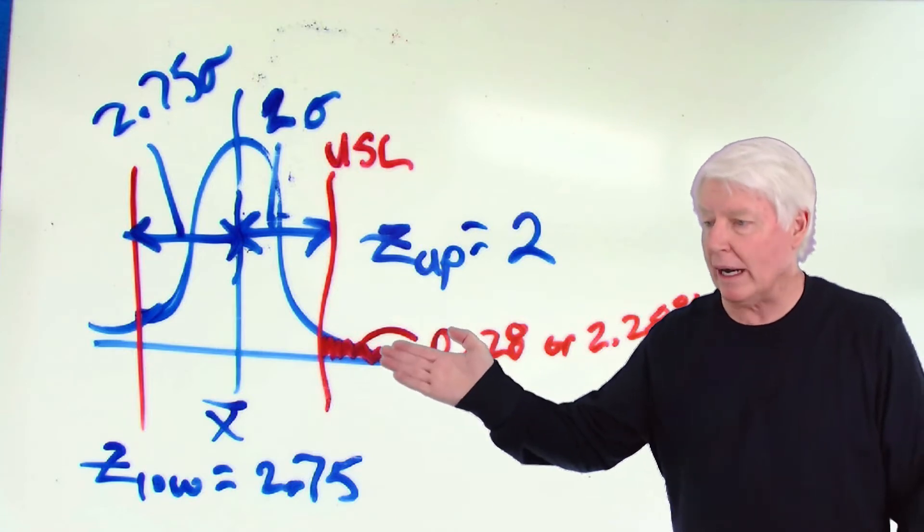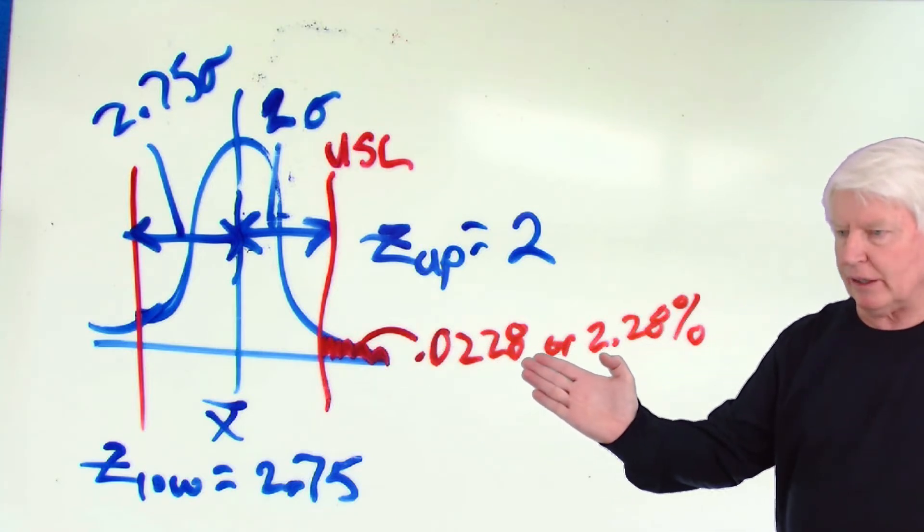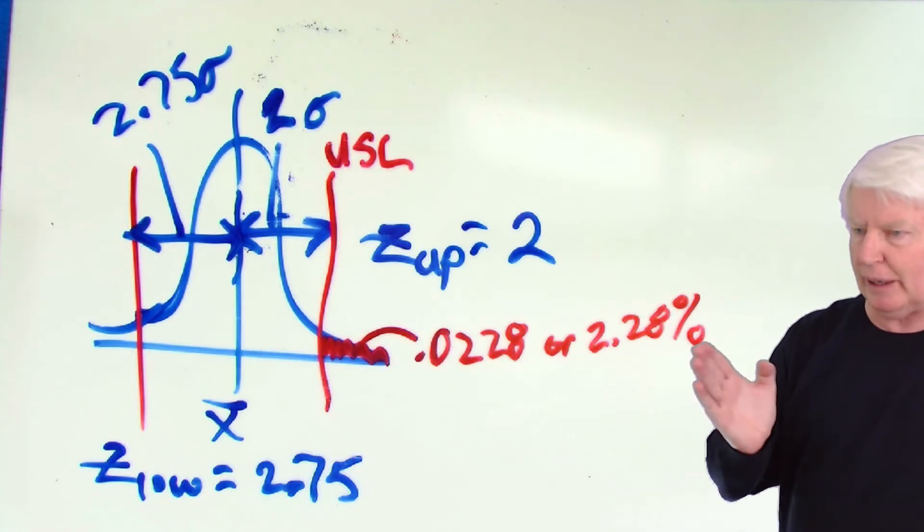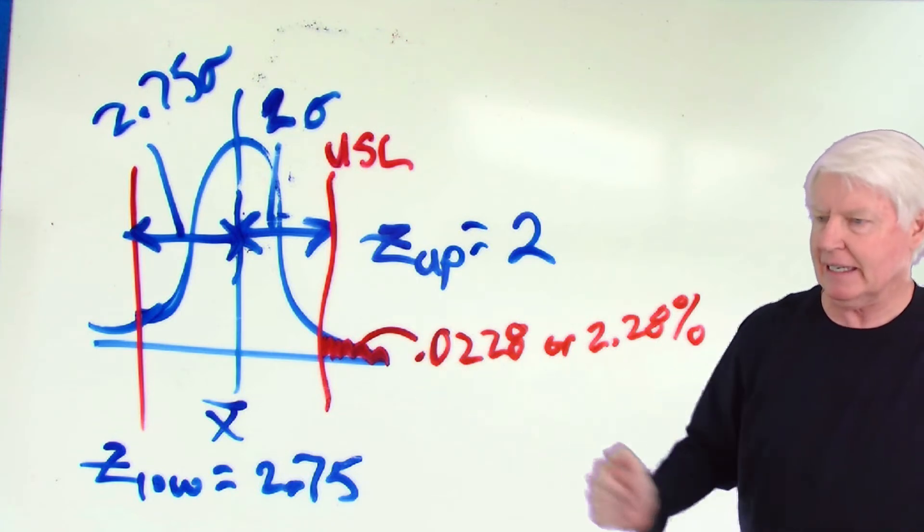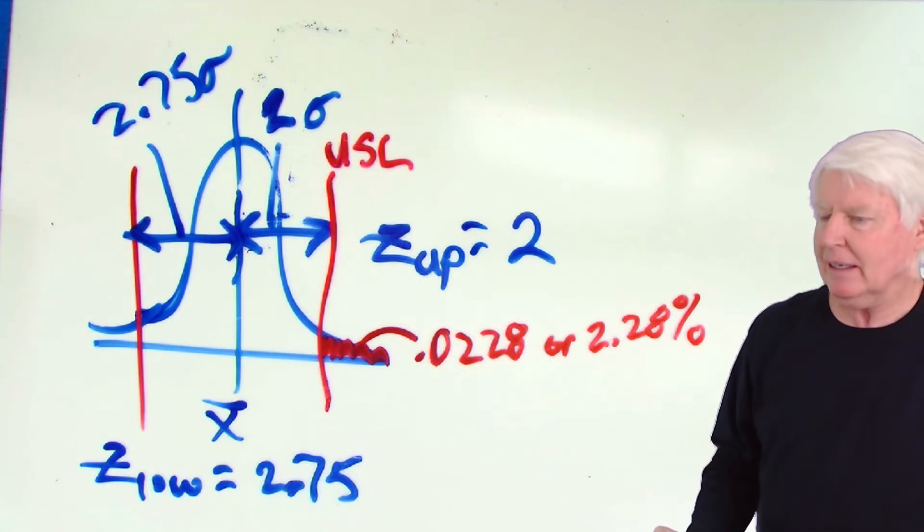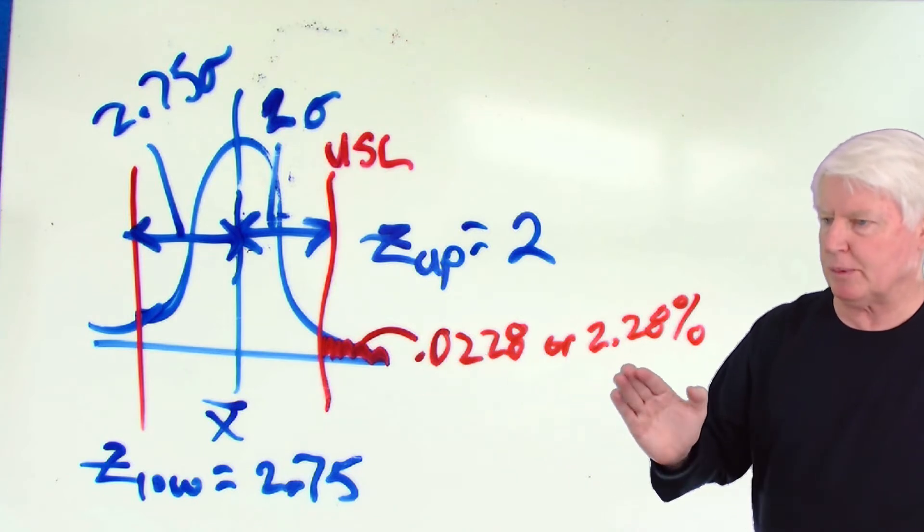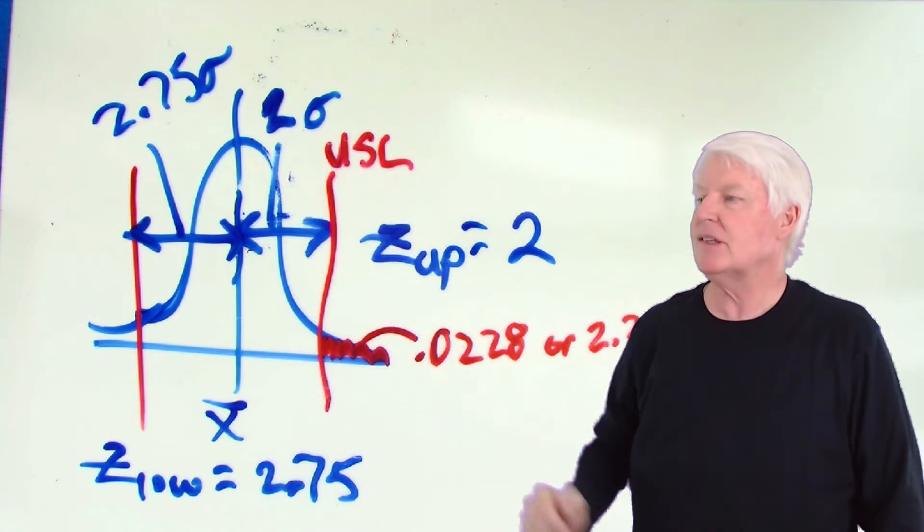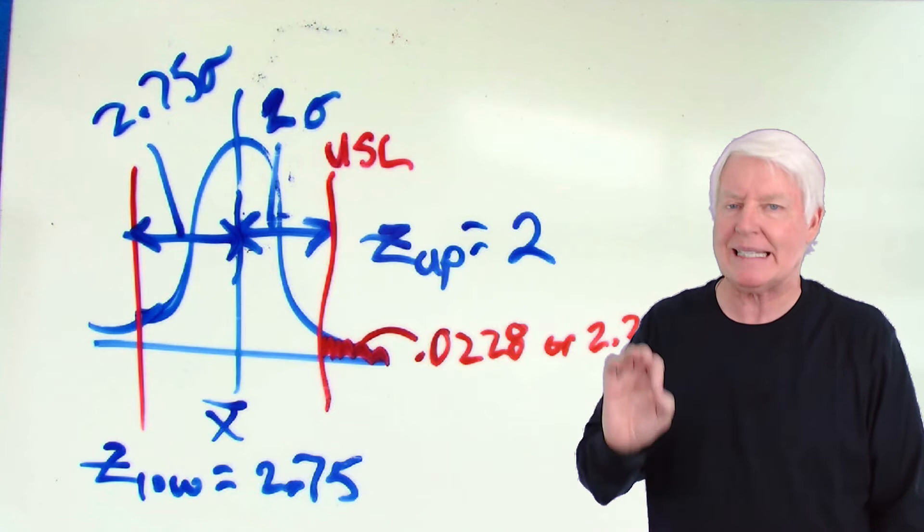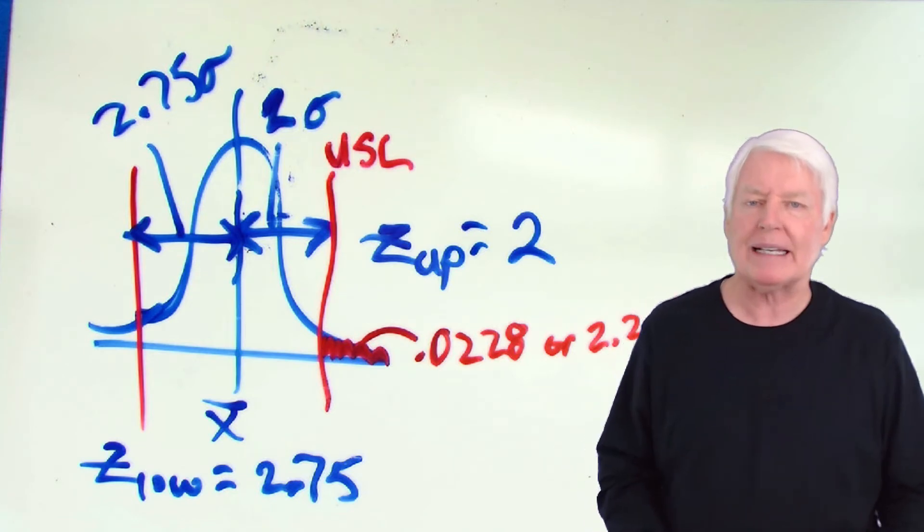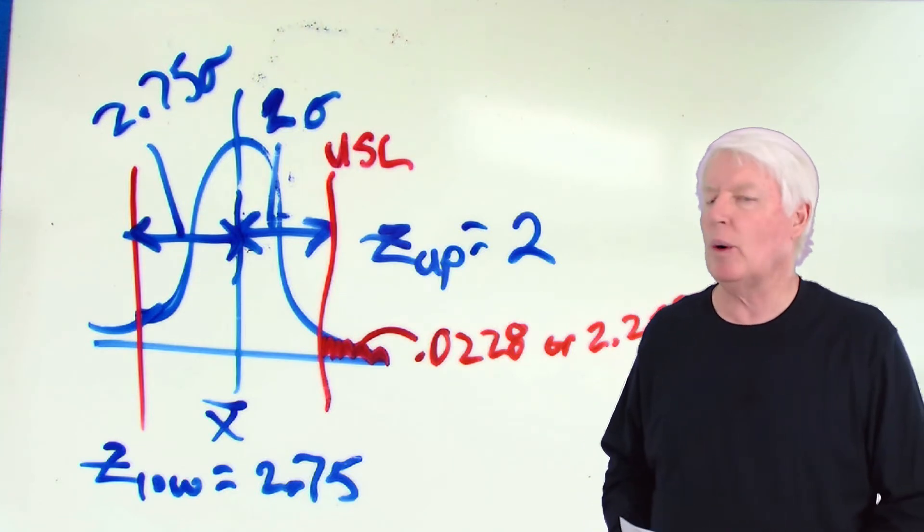And it says if you go out 2.00 standard deviations from the average, and notice I go 2.0, that's my second zero right there. 2.00, it's .0228. That's the proportion of the population that falls above the upper spec limit. So .0228. Let's go back to the whiteboard and put that number in. So here we are back at the whiteboard, and I wrote in that .0228 or 2.28%, and now I have an estimated scrap rate here above the upper spec limit.